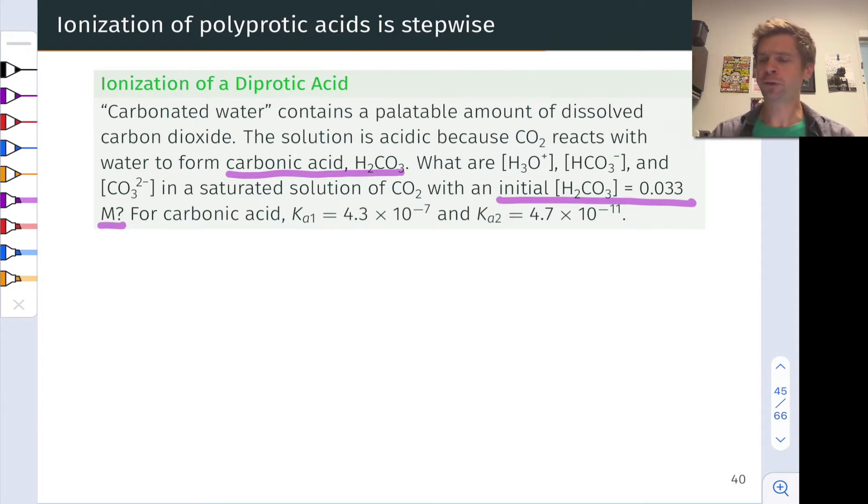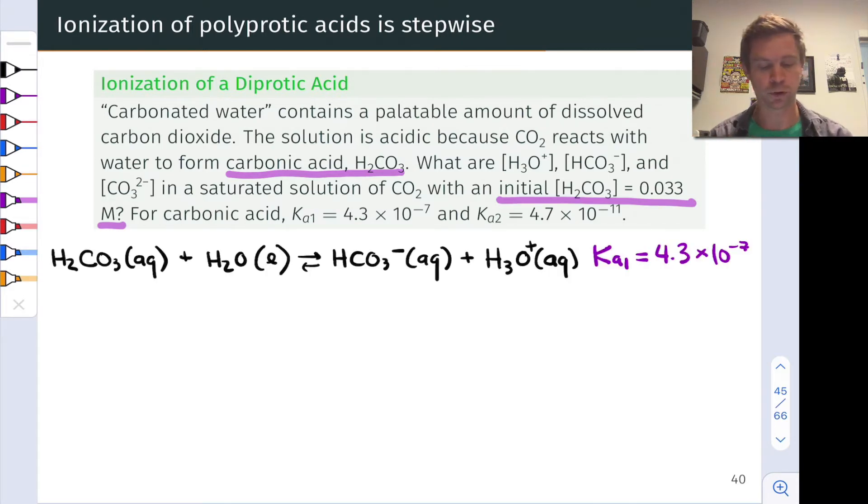So first, the first thing we want to do is get a handle on the chemical reactions that are occurring when carbonic acid is dissolved in water. This is the key acidic species. And it's got two removable protons, and so two acid ionization or acid dissociation equilibria, two reactions with water.